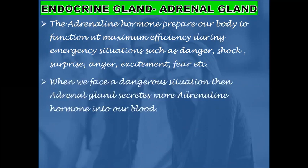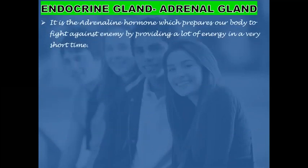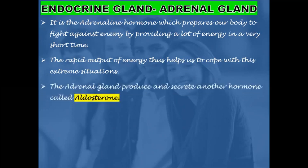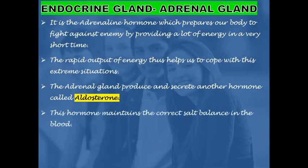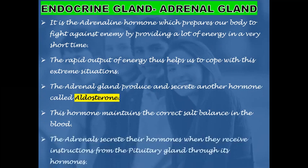When we face a dangerous situation, the adrenal gland secretes more adrenalin hormone into our blood. All these actions of adrenalin produce a lot of energy in the body very quickly, helping our body to fight against threats by providing energy in a very short time. The adrenal glands also produce and secrete another hormone called aldosterone, which maintains the correct salt balance in the blood. The adrenal glands secrete their hormones when they receive instructions from the pituitary gland.